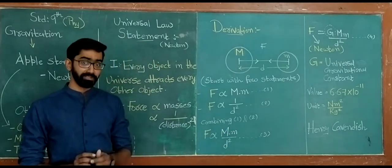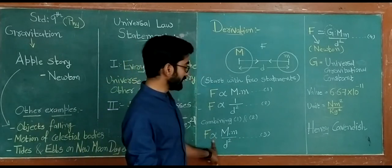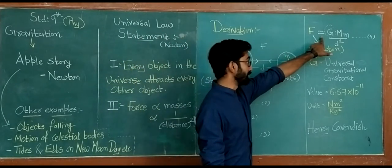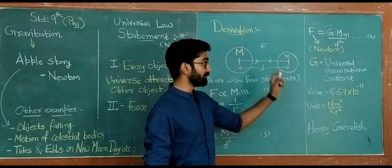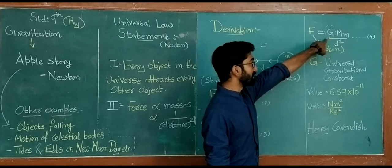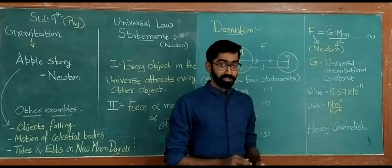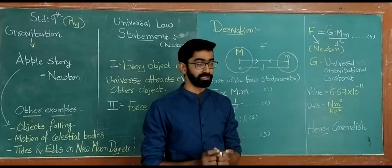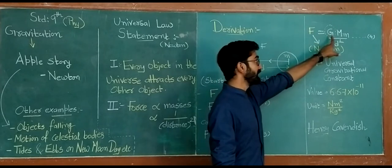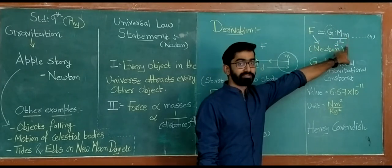Friends, whenever we remove the proportionality symbol, we are doing two things. First, we are replacing the symbol with equals to, and then we are putting a constant. Here, in this formula, you can see a new constant, a new letter, which is capital G. After putting all this, our final formula: gravitational force acting between two bodies is f equals G capital M into small m upon d square. This is the final formula.